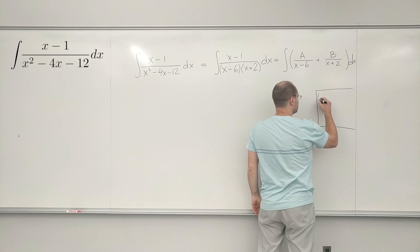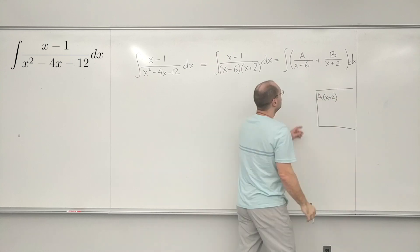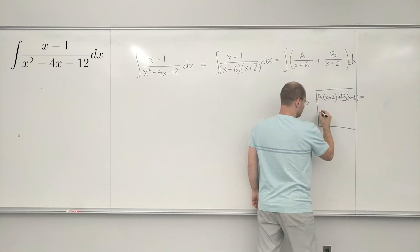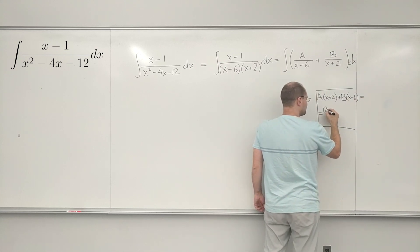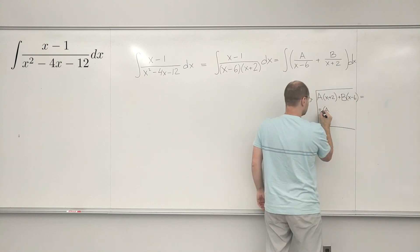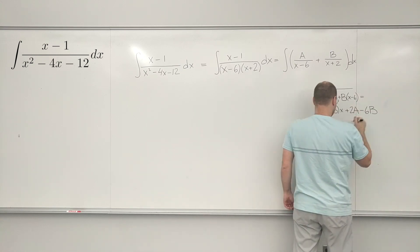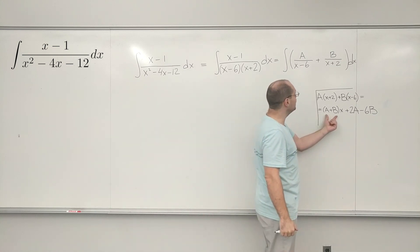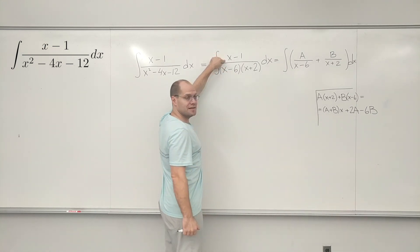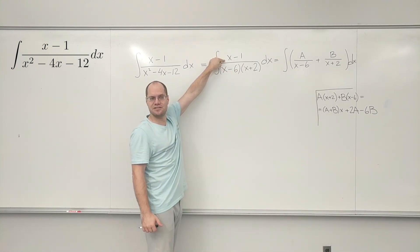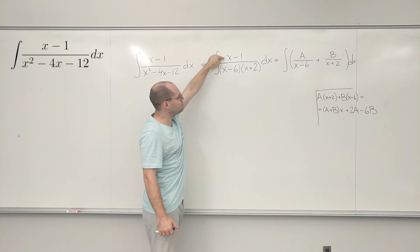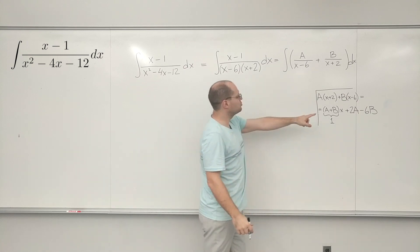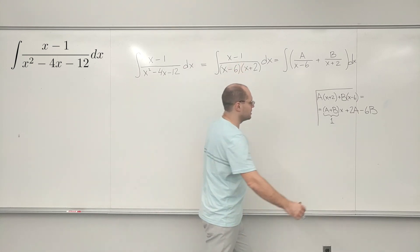So it'll be A times x plus 2, and recombining — collecting like terms — it will be A plus B times x, plus 2A minus 6B. Now we see that A plus B must equal 1, because that's the linear coefficient in our target, and 2A minus 6B must equal minus 1.